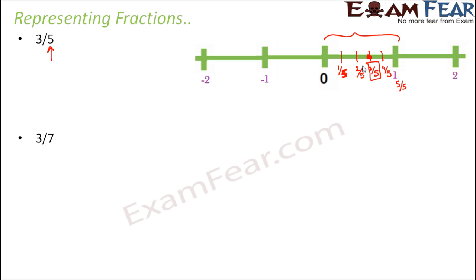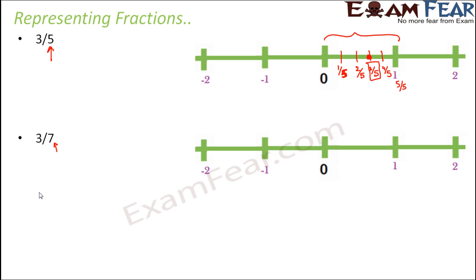Pretty simple, right? Let's take the next example: 3 by 7. So what is the denominator here? It's 7. So again the same thing, but this time we will divide it into 7 equal parts: 1, 2, 3, 4, 5, 6 and 7. So this is 1 by 7, 2 by 7, 3 by 7, 4 by 7, 5 by 7, 6 by 7 and 7 by 7. So where is 3 by 7? 3 by 7 is somewhere here.